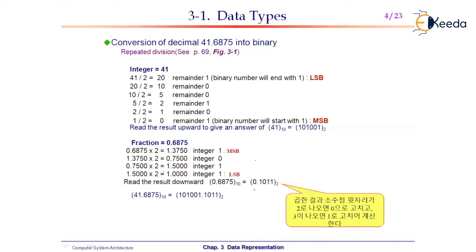1.5000 × 2 = 1.000, giving the fourth bit. Together these give the binary digits right after the binary point. Whenever you convert the fractional part from decimal to binary, multiply the fraction by 2 repeatedly.